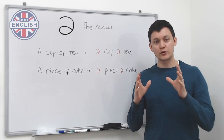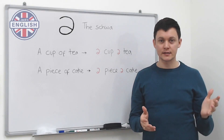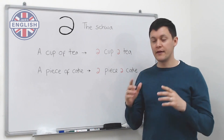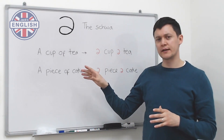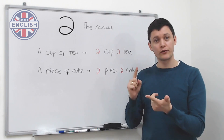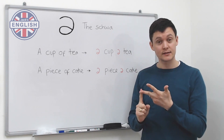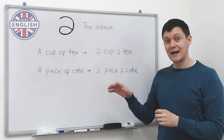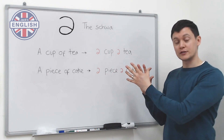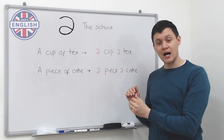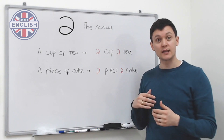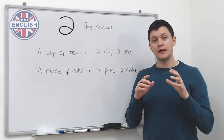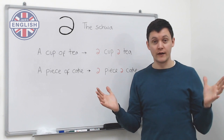Last class we looked at the schwa — what it is and how we make it with our mouth. Then we looked at a few different words: banana, computer, and police. We saw how the schwa is used in those words and how the schwa is always the unstressed syllable in words like postman and policeman. Today we're going to expand on that.